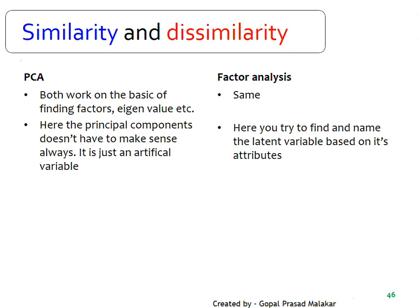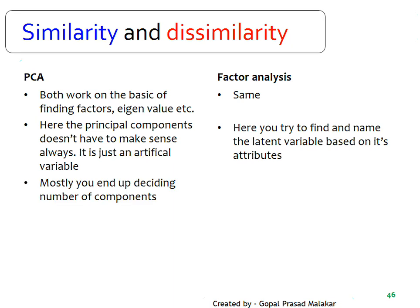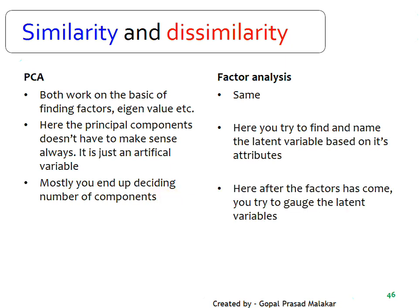In factor analysis, you try to make a judgment about the latent variable — you are looking for meaning in the factor. In PCA, these are just artificial variables. In PCA, you mostly end up deciding how many components to retain, but in factor analysis, your job does not stop there.